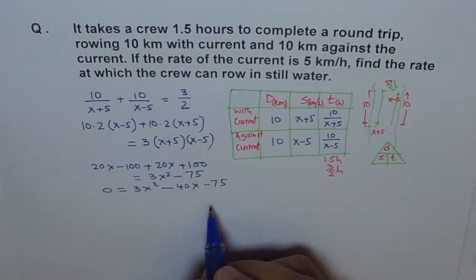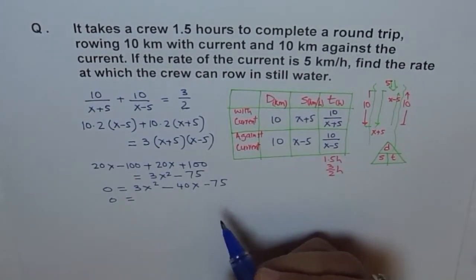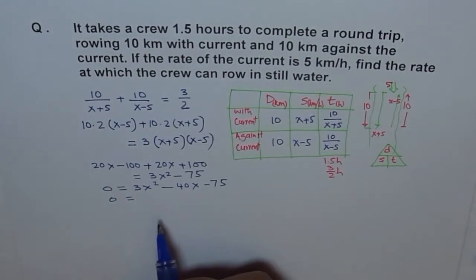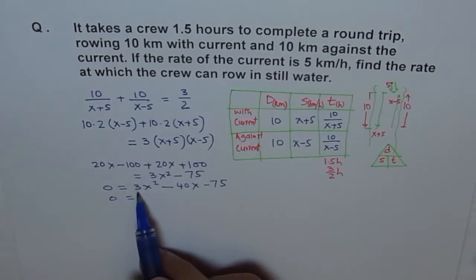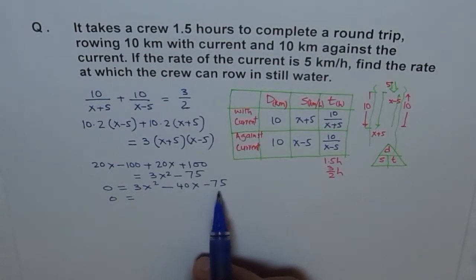Now, this equation can be factored, right? If you feel, you can use quadratic formula at this stage. And, you know, what is X equals to? According to quadratic formula, minus B plus minus square root of B square minus 4 is C. Everything divided by 2 times A, where A is 3, B is minus 40, and C is minus 75. So, you can use that, right?